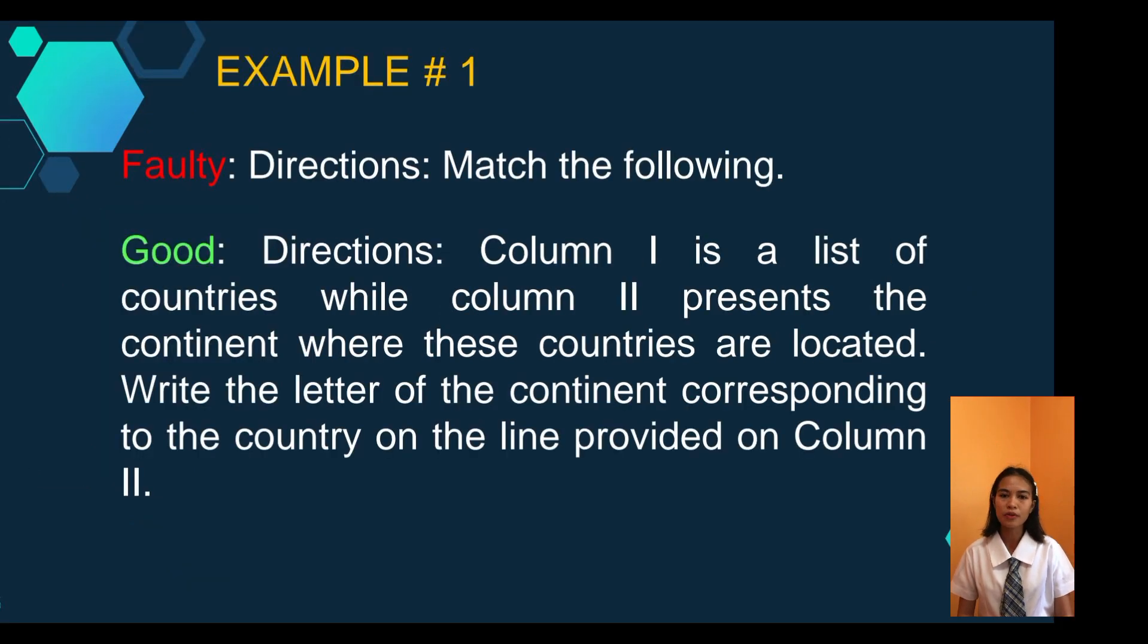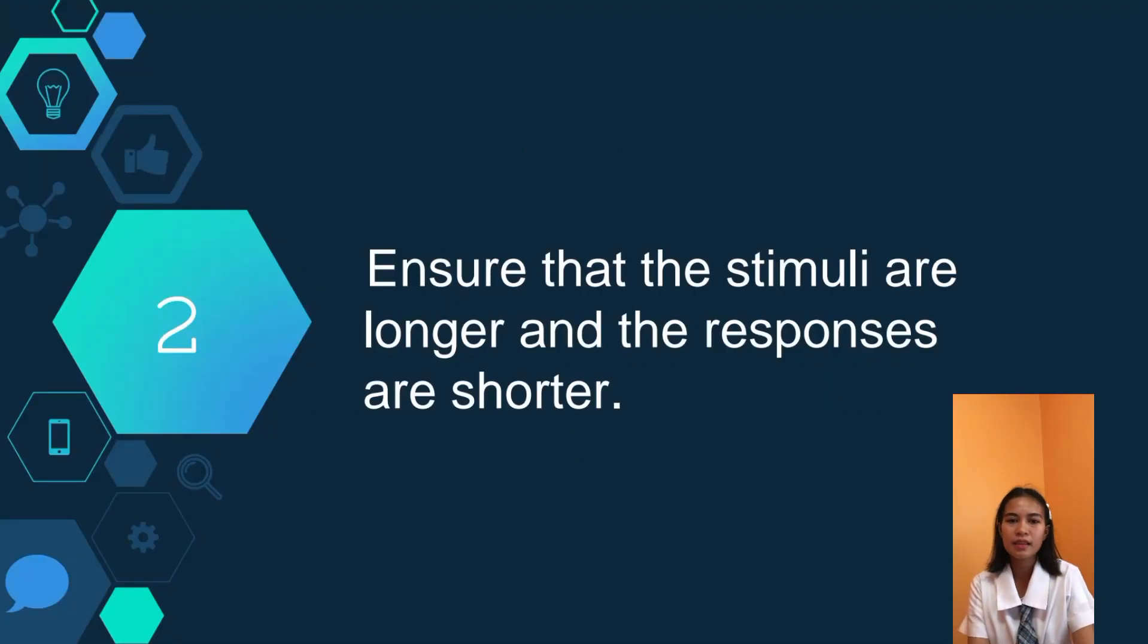For example, column 1 is a list of countries, while column 2 presents the continent where these countries are located. Write the letter of the continent corresponding to the country on the line provided in column 1. Here, the directions are stated clearly, so the students will not ask teachers about the instruction since it has been directed or straightforward.